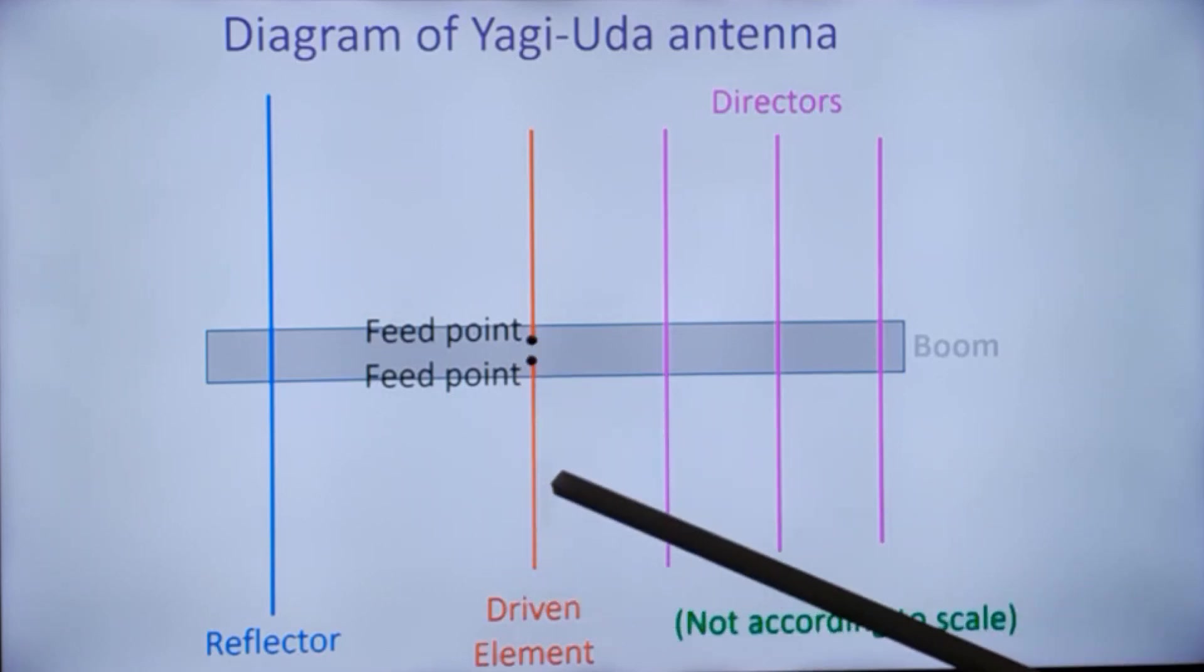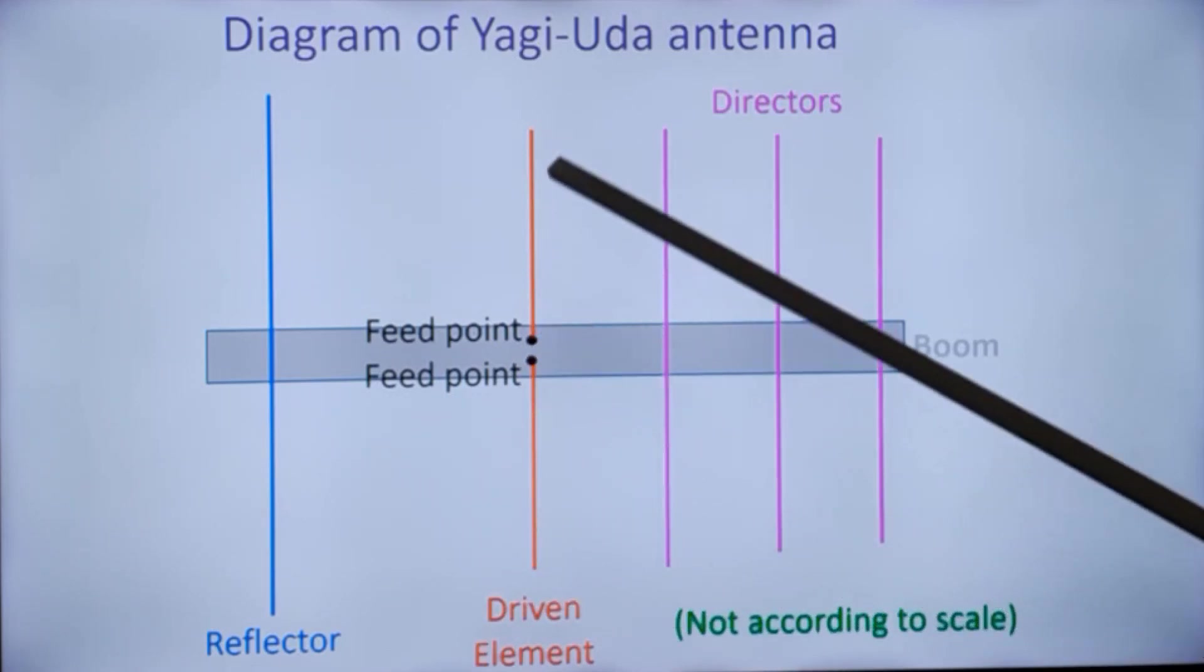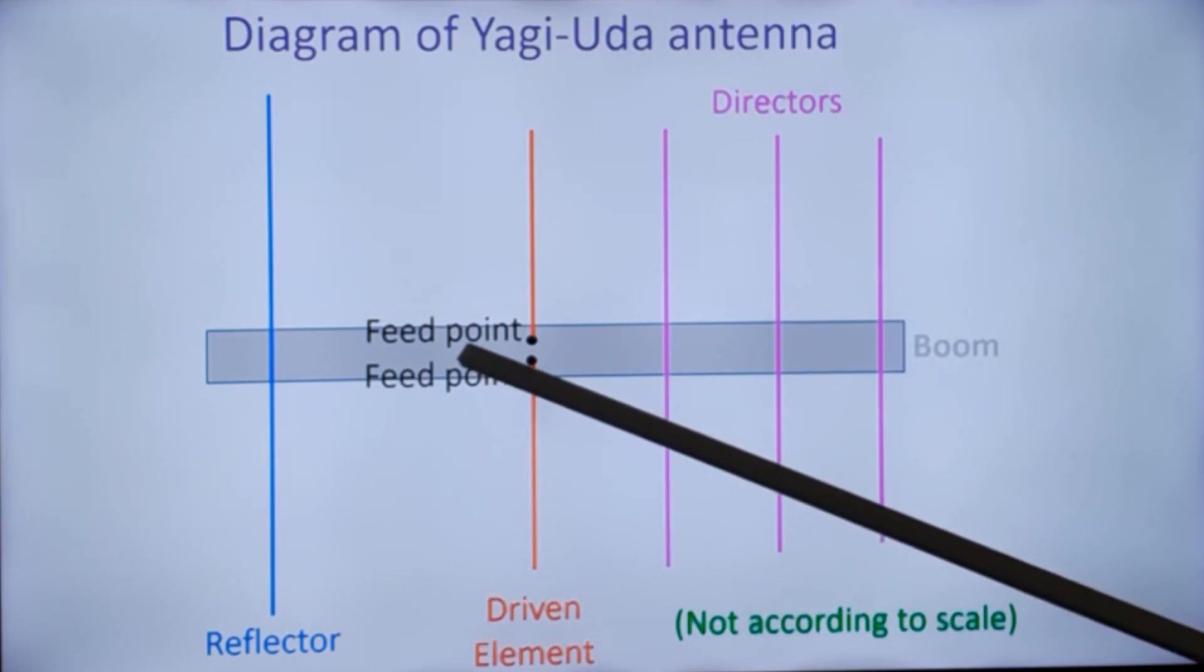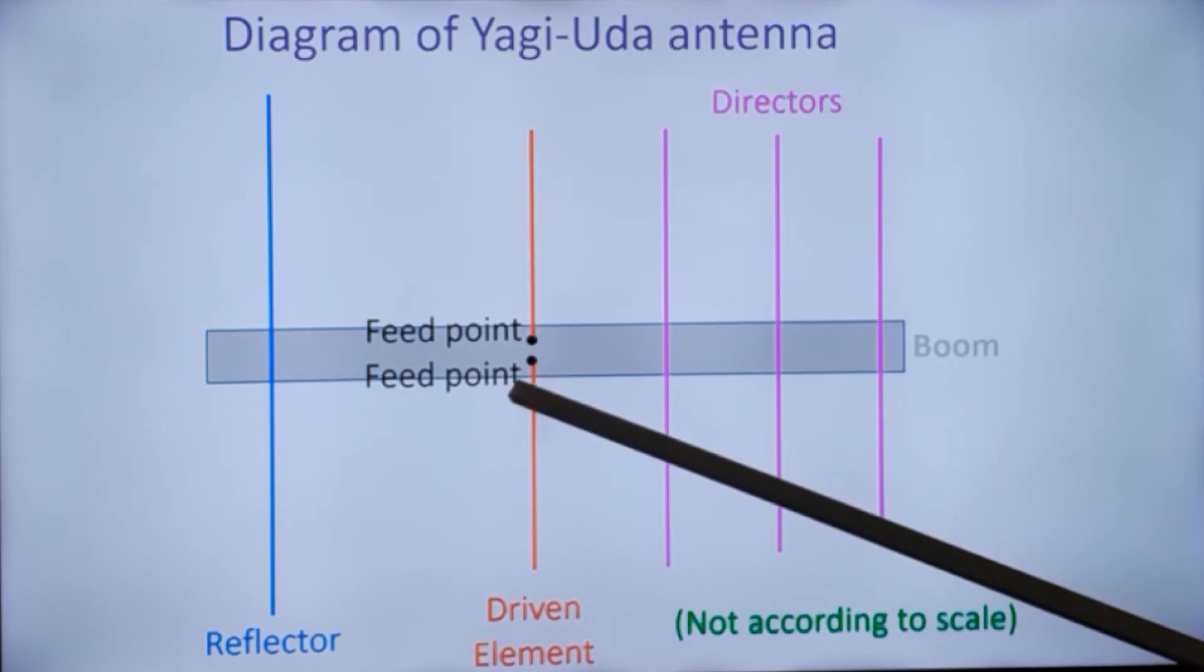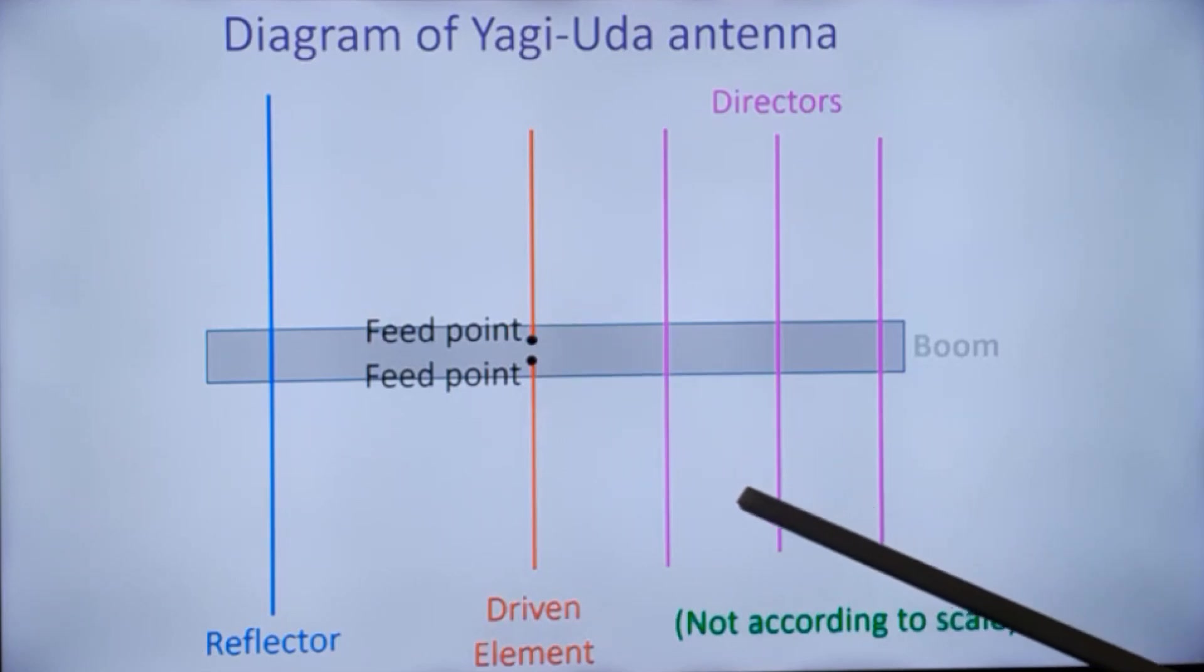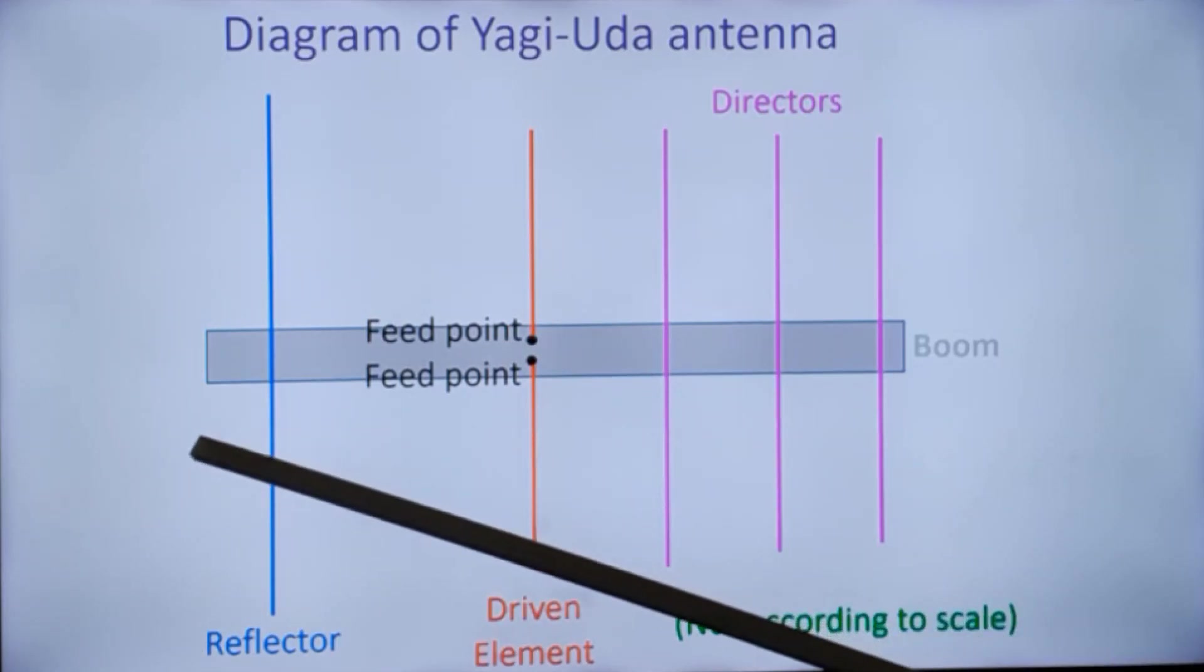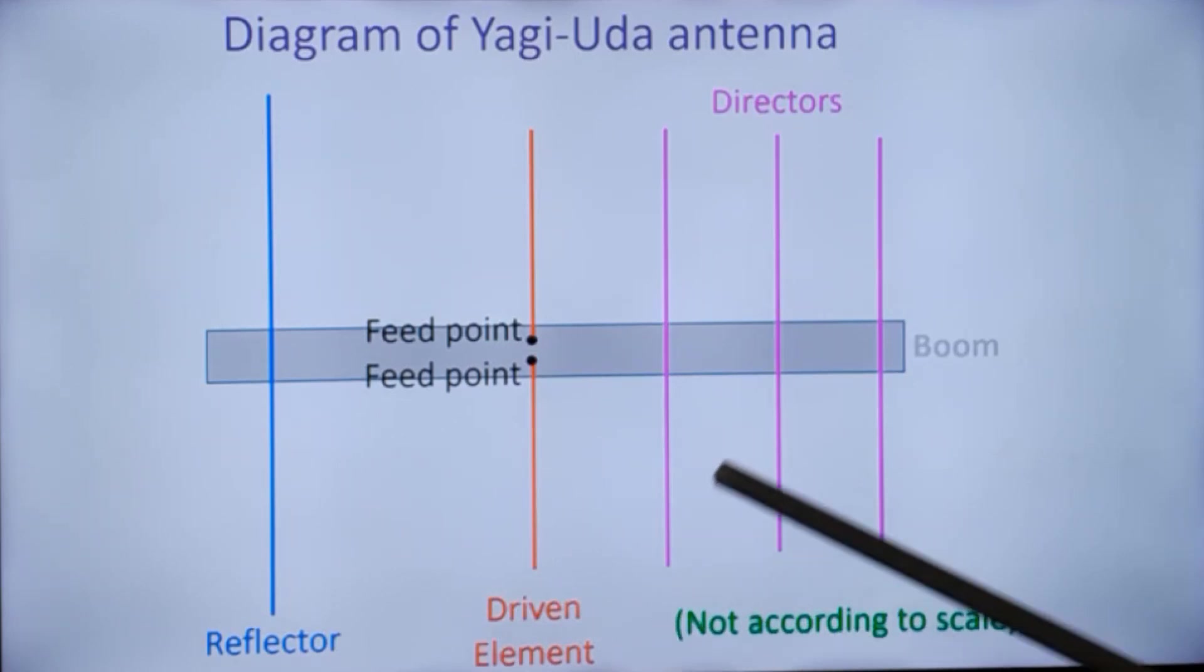The feed points are seen here. A usual dipole antenna, you will not connect the feed point to the boom, it will be insulated. Similarly, the directors in front and reflectors can also be insulated from the boom.